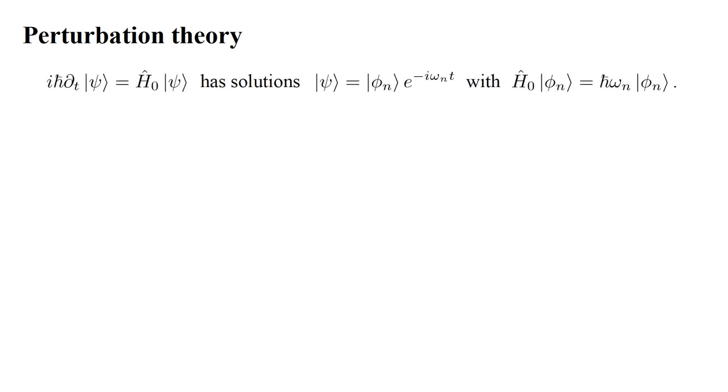Suppose for a system that satisfies the Schrodinger equation with Hamiltonian H-hat-zero, we can find explicit stationary states with spatial part phi-n and time dependence e to the minus i-omega-n-t. The spatial parts satisfy the time-independent Schrodinger equation with energy h-bar omega-n.